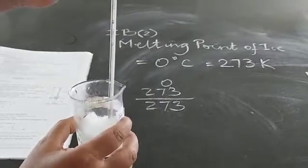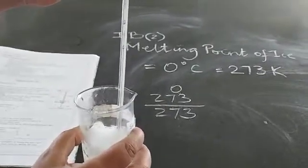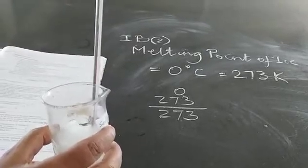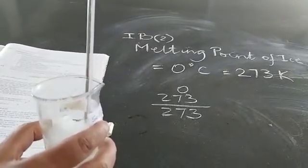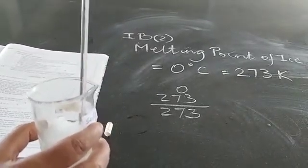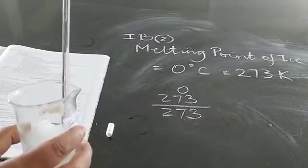Over here it's coming to about 3 degrees centigrade but in your journal you will not write 3 degrees centigrade. You will write the melting point of ice is 0 degree centigrade.